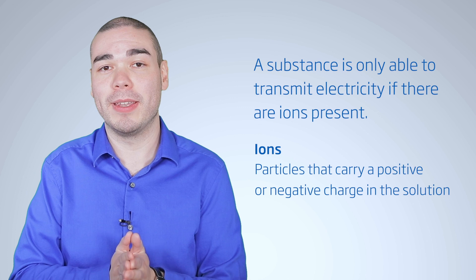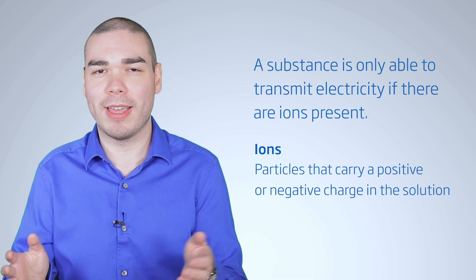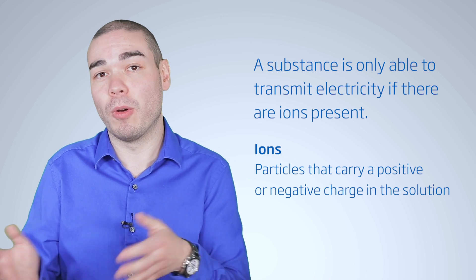A substance is only able to transmit electricity if there are ions present. Ions are particles that carry a charge, either positive or negative, in the solution. So for example, if you had a water sample and dissolved a bunch of sugar in it, the EC measurement would not change much. This is because sugar does not break apart into charged ions.